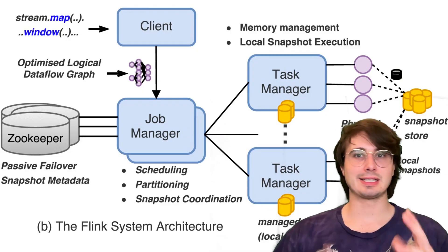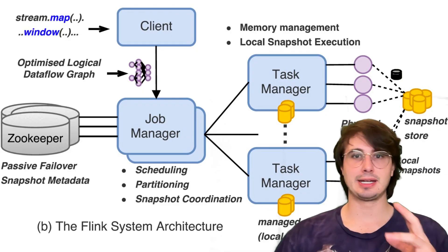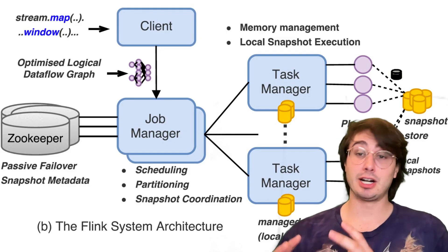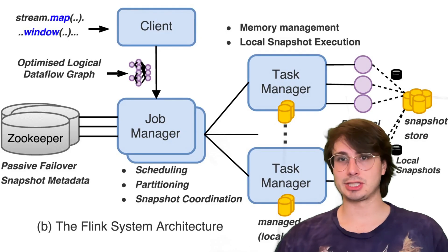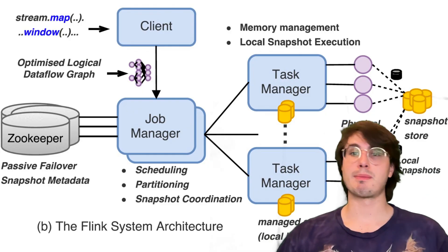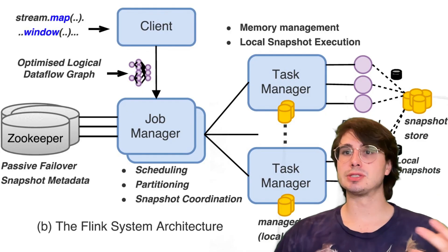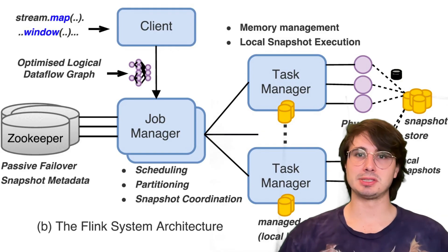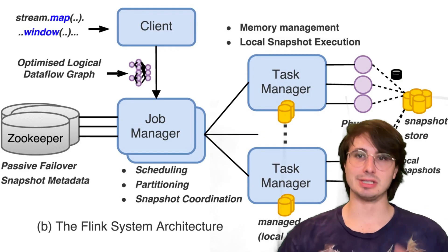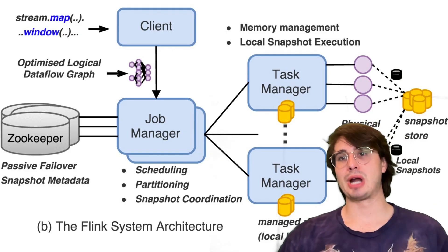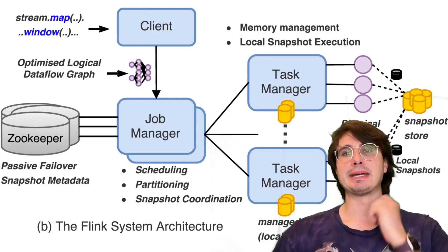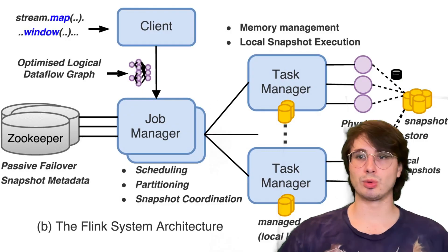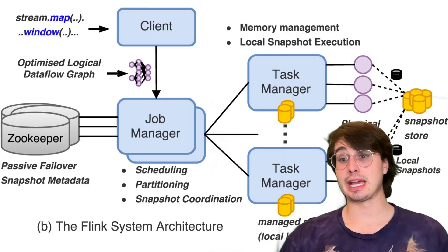For state migration or schema evolution, make sure you're carefully planning ahead. Design your state objects with future evolution in mind, use versioned schemas or flexible formats. When modifying state schemas, ensure there's backwards compatibility or implement proper migration logic, and test state migration thoroughly in staging environments before production deployment.